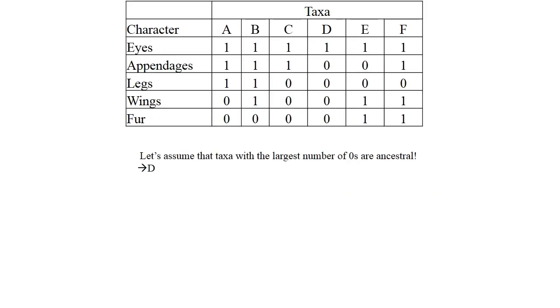We need to assume that the taxa with the largest number of zeros are ancestral. Here D has the largest number of zeros so we will put D on the tree first. Next we need to find the closest taxa to D by counting how many differences we see between the features of D and the features of other taxa. So here C has only one difference with D so C will be the next taxon that goes on the tree.